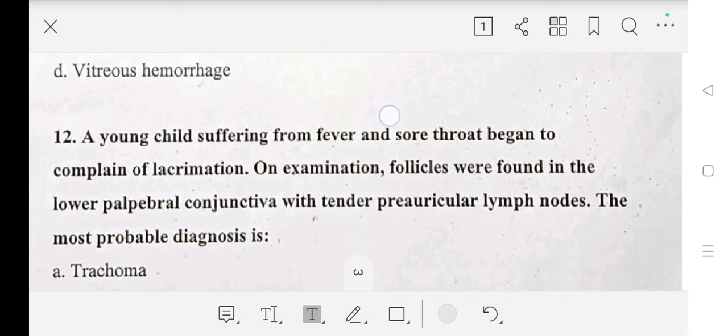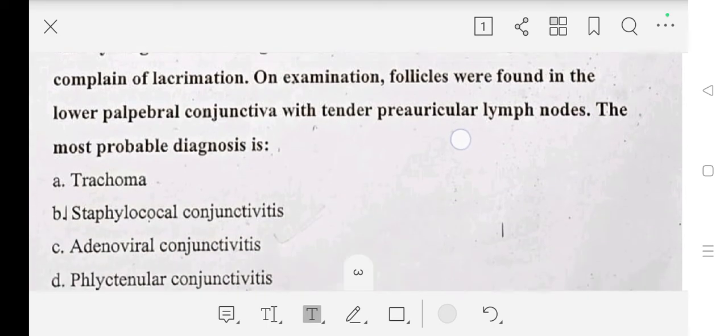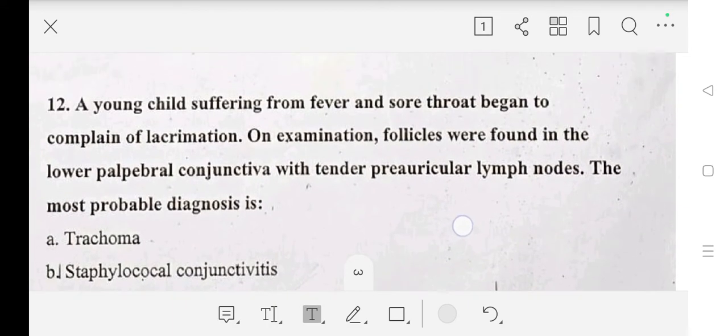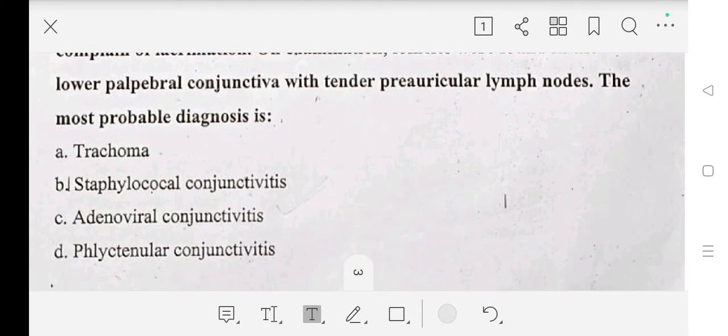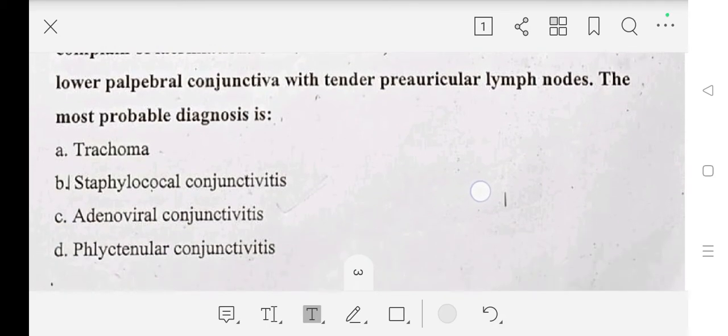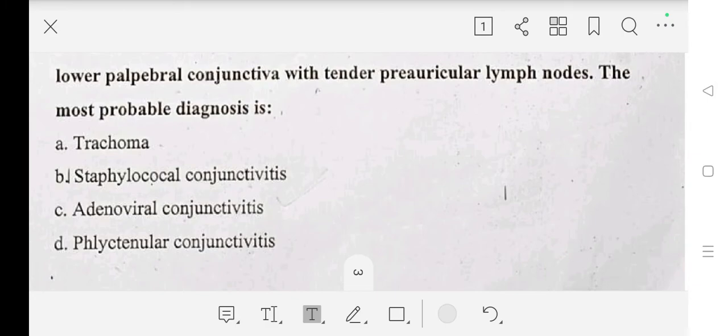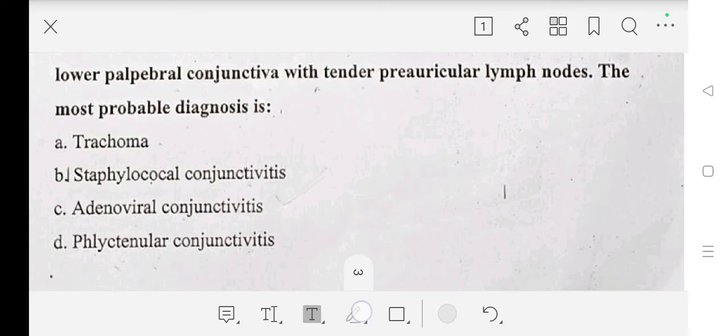Question number twelve: a young child suffering from fever and sore throat began to complain of lacrimation. On examination, follicles were found in the lower palpebral conjunctiva with tender preauricular lymph node. The most probable diagnosis is trachoma, staphylococcal conjunctivitis, adenoviral conjunctivitis, or phlyctenular keratoconjunctivitis? Option is adenoviral conjunctivitis.